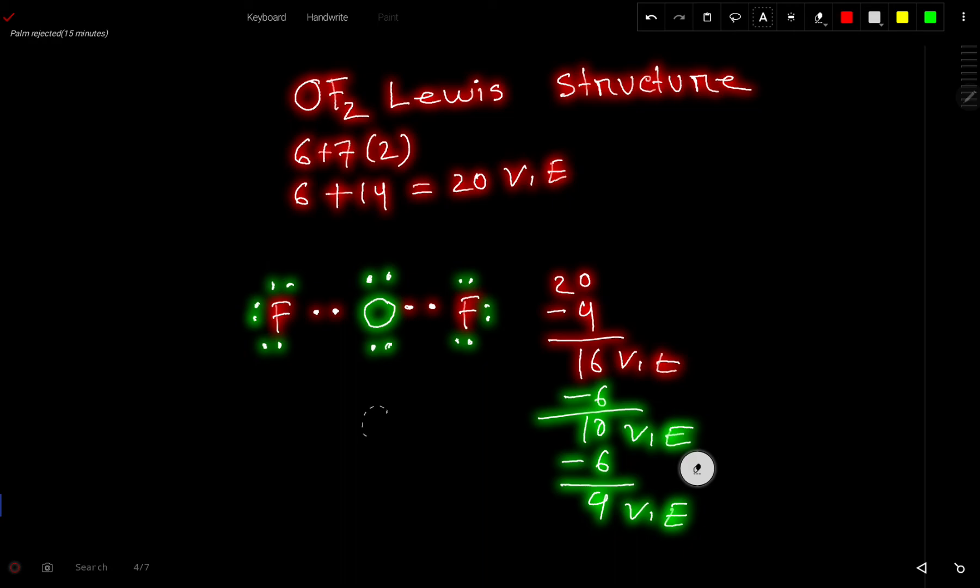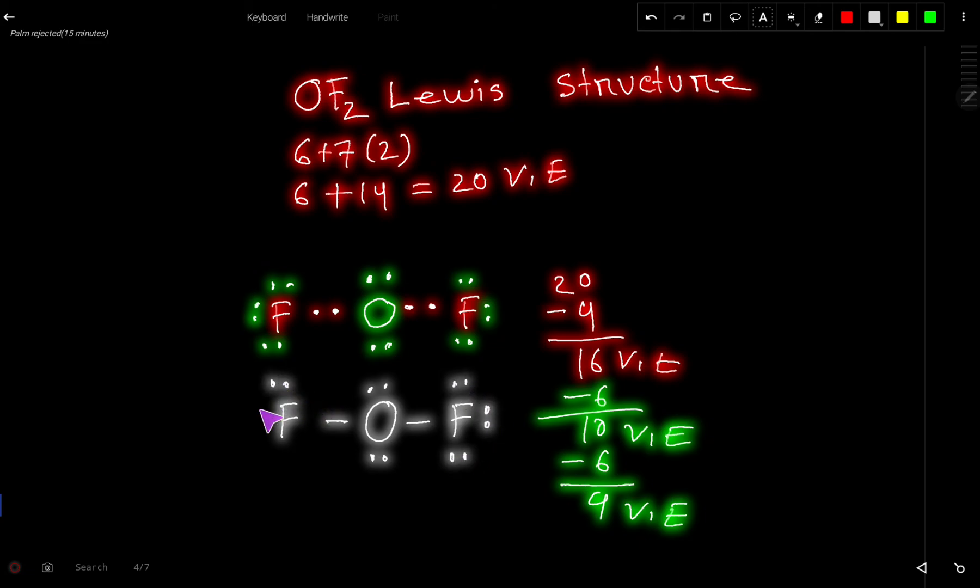We can express this structure like this: O, then we have 2 lone pairs here. Then this bond pair will be a dash, and this bond pair will be a dash. Now here we have 6 valence electrons. So the OF2 Lewis structure will be this or this. So thank you for watching this video. Be well. Remember, we can express bond pairs as dashes.